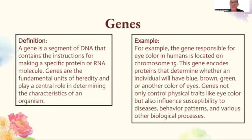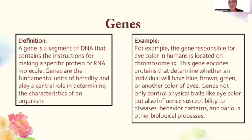A gene is a segment of DNA that contains the instructions for making a specific protein or RNA molecule. Genes are the fundamental units of heredity and play a central role in determining the characteristics of an organism. For example, the gene responsible for eye color is located on chromosome 15 and encodes proteins that determine whether an individual will have blue, brown, green, or another color of eyes. Genes also influence susceptibility to diseases and behavior patterns — this will also come up in AP Bio.